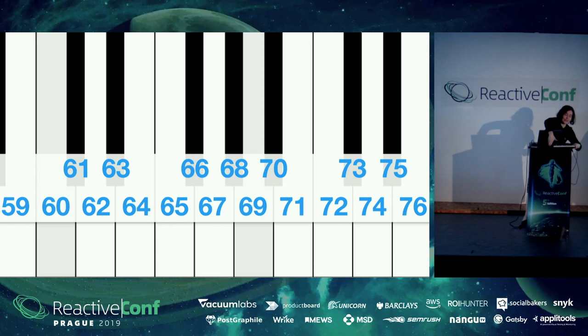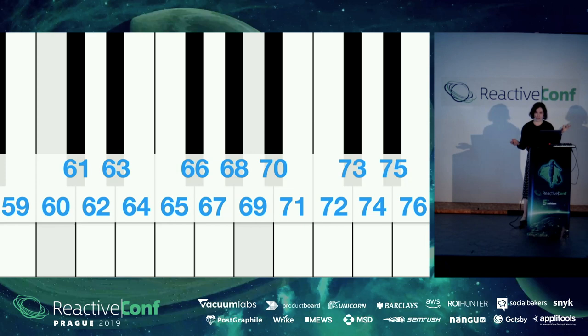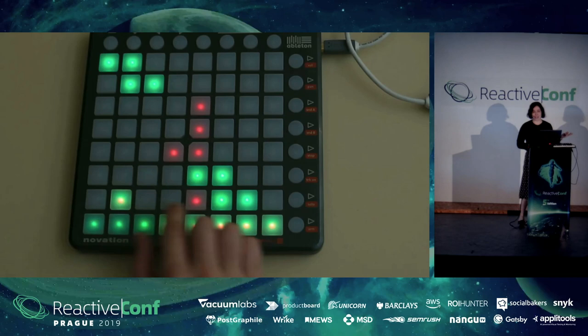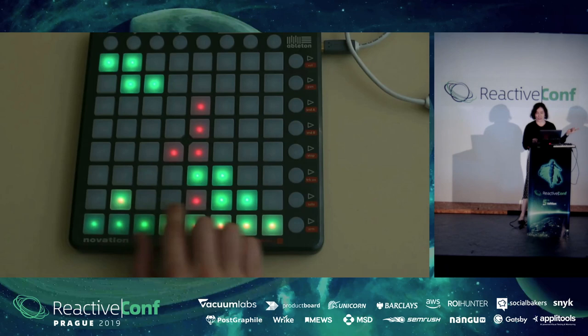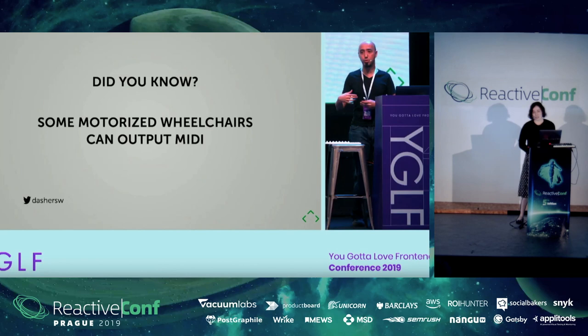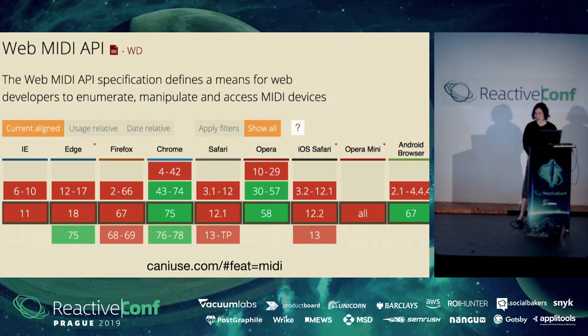The way it works — super simplified short version — is you just assign a number to each key, each button, all these knobs; everything is assigned a number, and then you get an array of numbers into your application. It's not only used for music — apparently some wheelchairs can output MIDI too, so it's used to control all sorts of different devices. It's not super well supported on the web yet, pretty much just in Chrome, but it's good enough for a prototype.